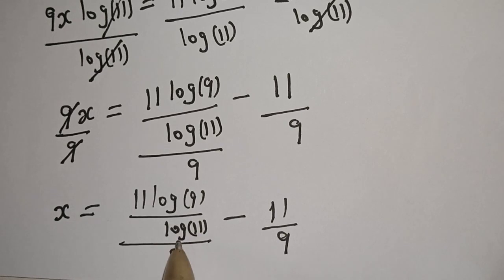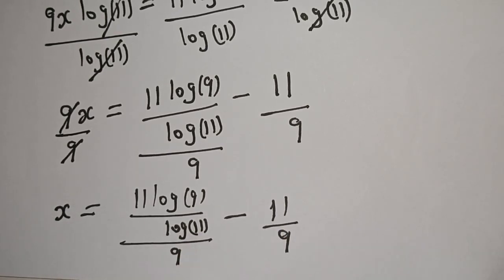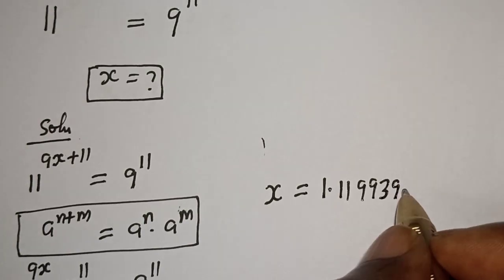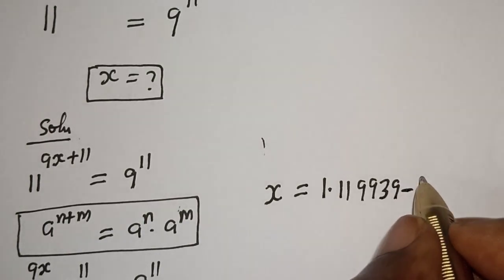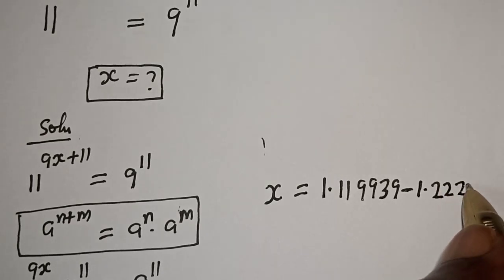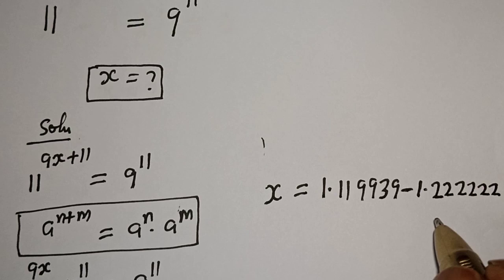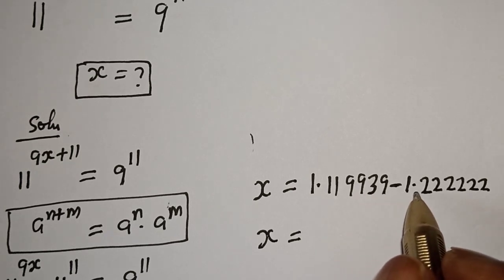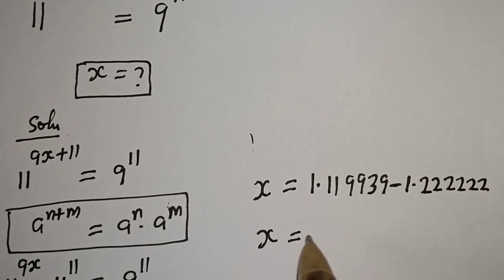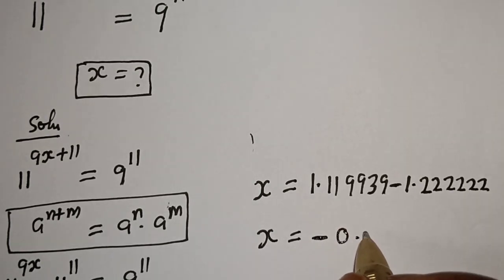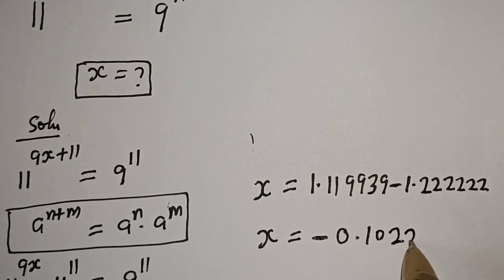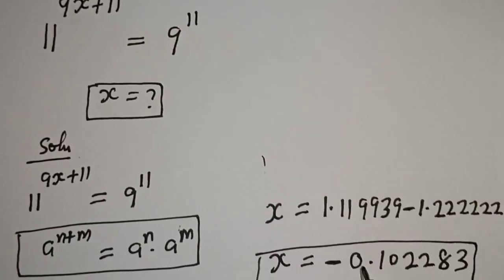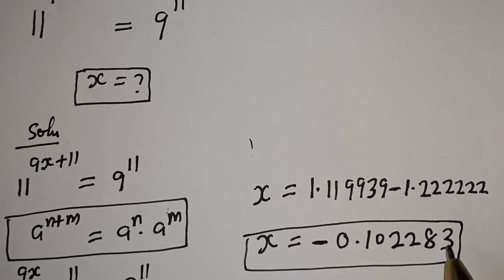Dividing these values, S equals 1.119939 minus 1.2222. Subtracting, S equals minus 0.102283. This is the final answer.